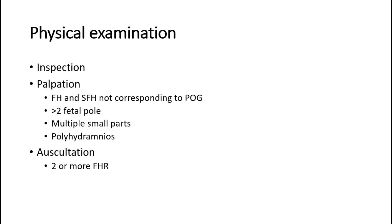On physical examination, on inspection the abdomen might be bigger than usual. On palpation, the symphyseal-fundal height does not correspond to the period of gestation and is usually larger than the date. We can palpate for more than two fetal poles, multiple small parts, and there may be polyhydramnios. On auscultation, we will be able to hear two or more fetal heart rates, suggesting multiple fetuses.